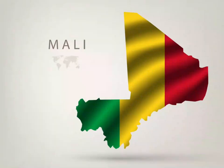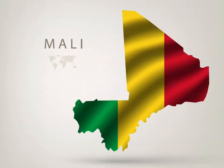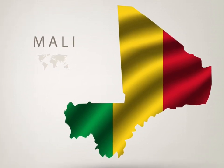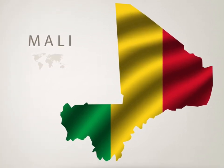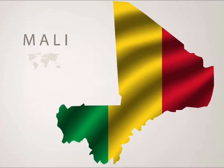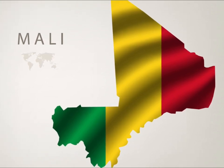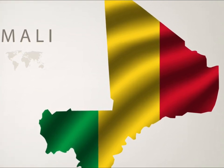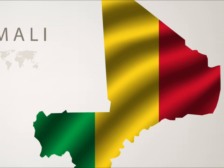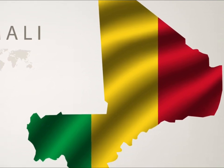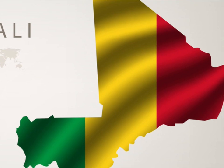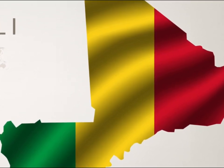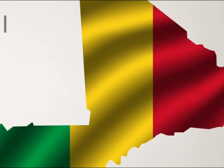Mali: The Malian national flag was adopted on April 4, 1959. It is a tricolor with three equal vertical stripes. From the hoist, the colors are green, gold, and red — the Pan-African colors. The flag of Mali is almost identical to the flag of Guinea, with the exception that the colors are in reverse order. Green is a symbol of the nation's fertile lands, yellow represents purity and the mineral wealth of Mali, and the red color symbolizes the bloodshed for independence from the French.